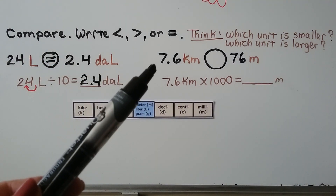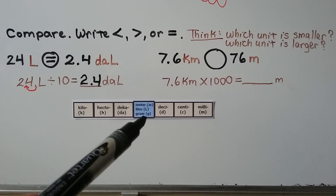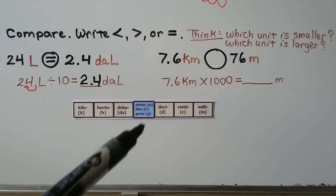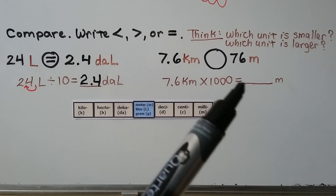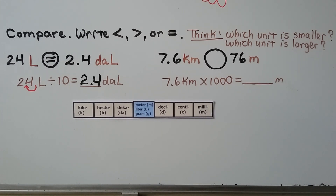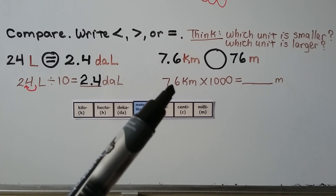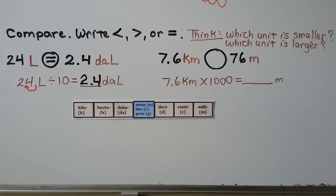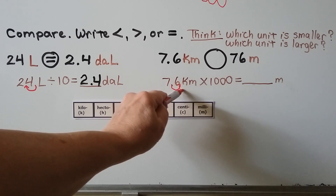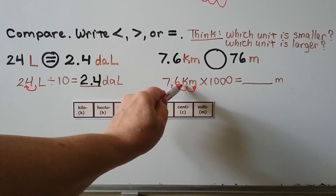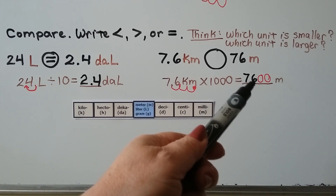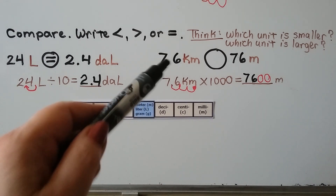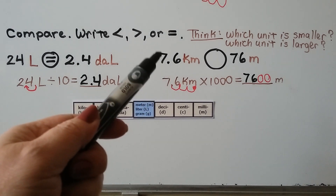Here we're comparing 7 and 6 tenths kilometers to 76 meters. Look at how much larger kilometers are than meters. We can do 7 and 6 tenths kilometers times 1,000 to find how many meters it equals. The decimal point is between the 7 and 6; we multiply by 1,000, so the decimal moves 3 hops to the right: 1, 2, 3 — adding two zeros as placeholders. So 7 and 6 tenths kilometers equals 7,600 meters. This is much greater than 76 meters.